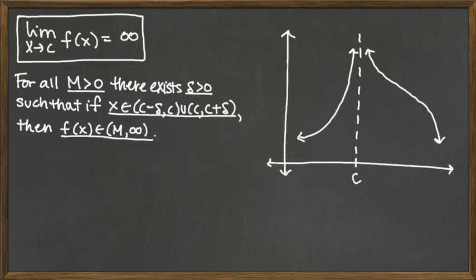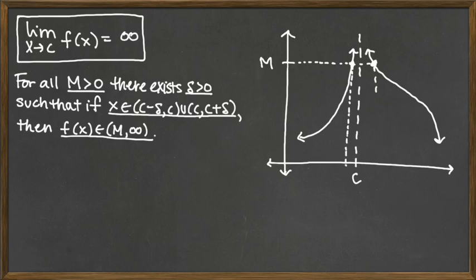Looking at what that would look like on a graph: for all M greater than zero, we think about M as a big y-value. Just like we had done with the epsilons — the L plus and minus epsilons — we trace back to the x-axis. We get two points, one from the left and one from the right, that we trace back down to the x-axis. Those two x-values give us outputs of M when plugged into the function, yielding two x-distances.